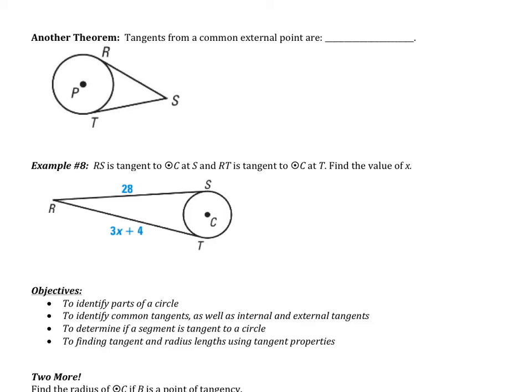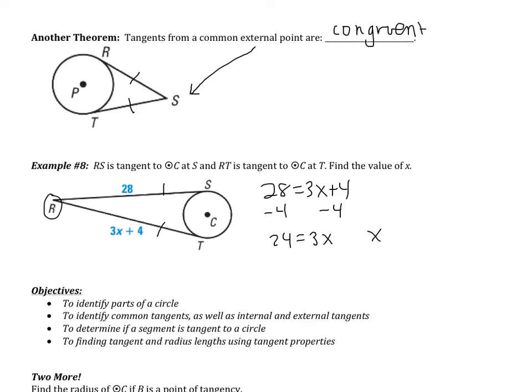One more theorem: tangents from a common external point are congruent. So if SR and ST are both tangents coming from the same external point S, then SR equals ST. In Example 8, RS and RT are both tangents to circle C from the same point. Since they're congruent: 28 = 3X + 4. Subtracting 4 gives 24 = 3X, so X = 8.